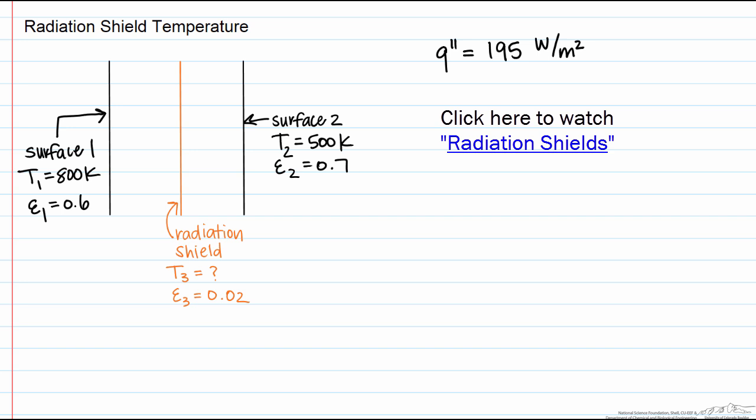In a previous screencast I showed you how to calculate the heat flux between two infinite parallel plates with and without radiation shields. Here we're going to look at the same system but we're going to calculate the temperature of the radiation shields.